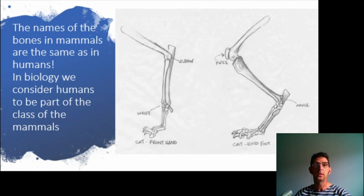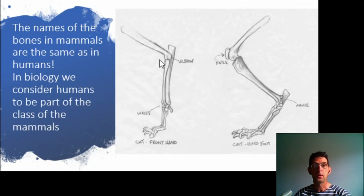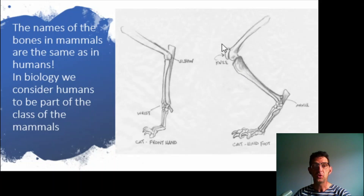If we look at the legs of a cat — and the person who drew this said this is the front hand of a cat — you can see that there is a wrist and there is an elbow. And when we look at a hind foot, we can find an ankle, and we can see a heel bone as well, and we can see the knee and the kneecap.